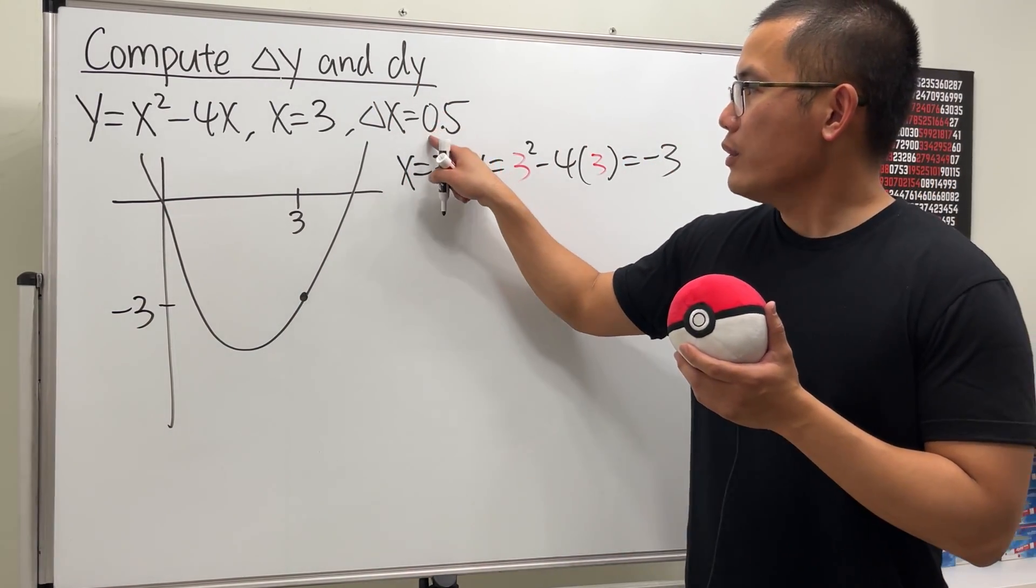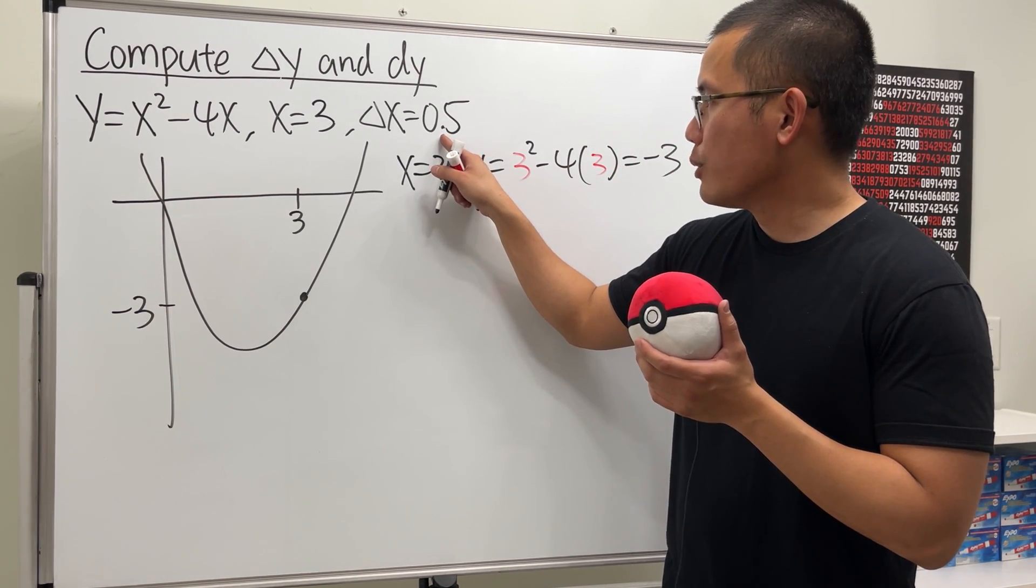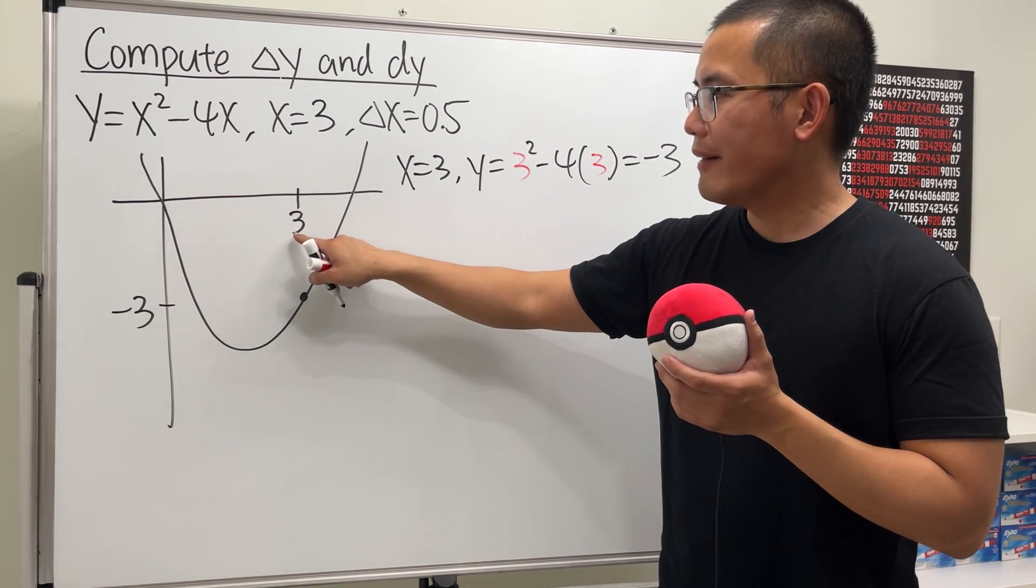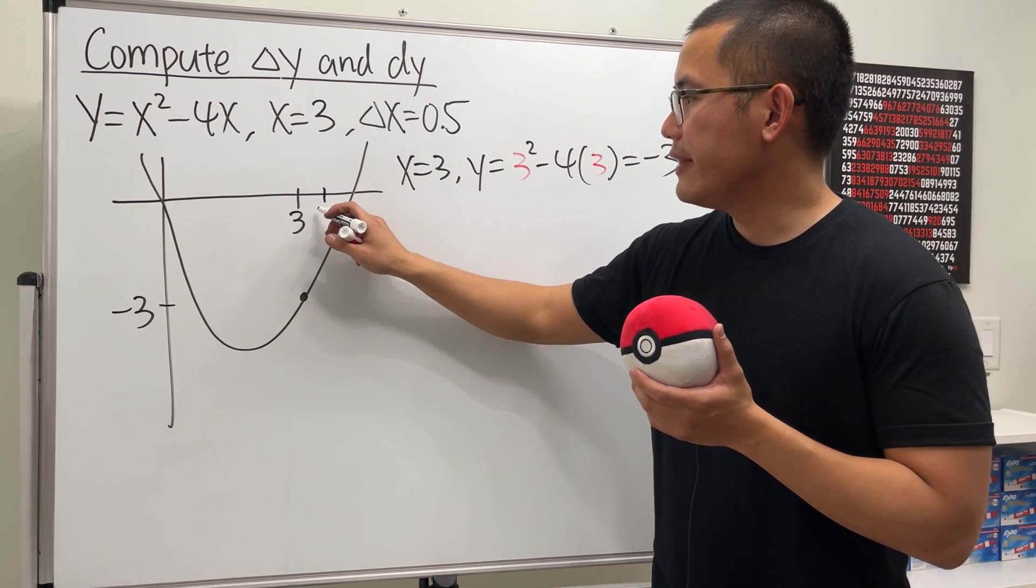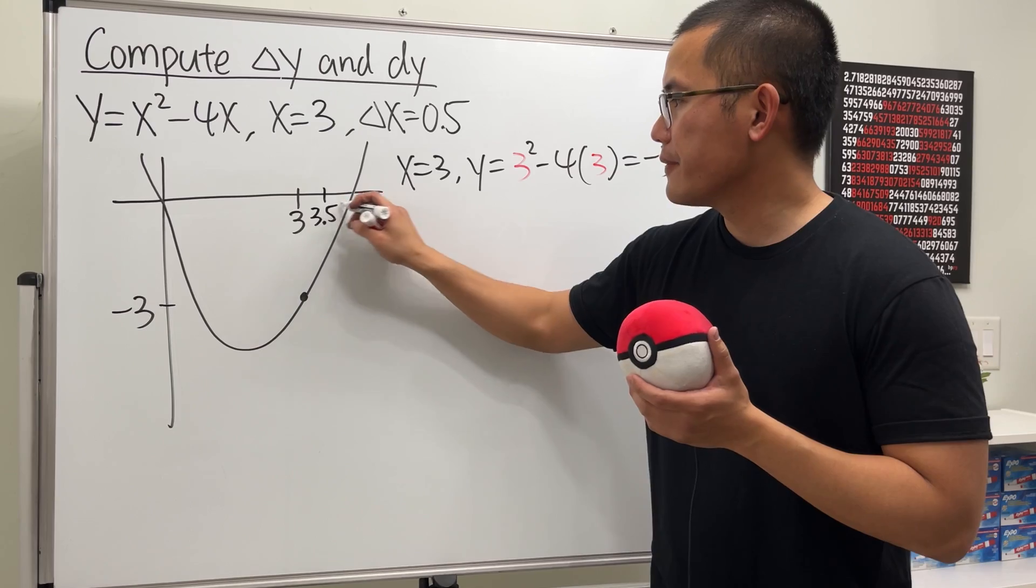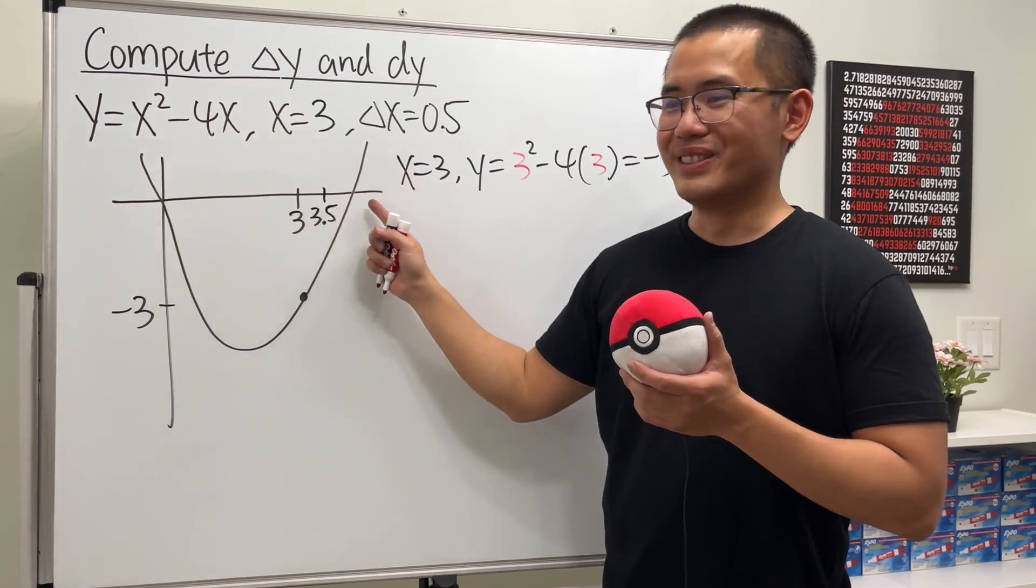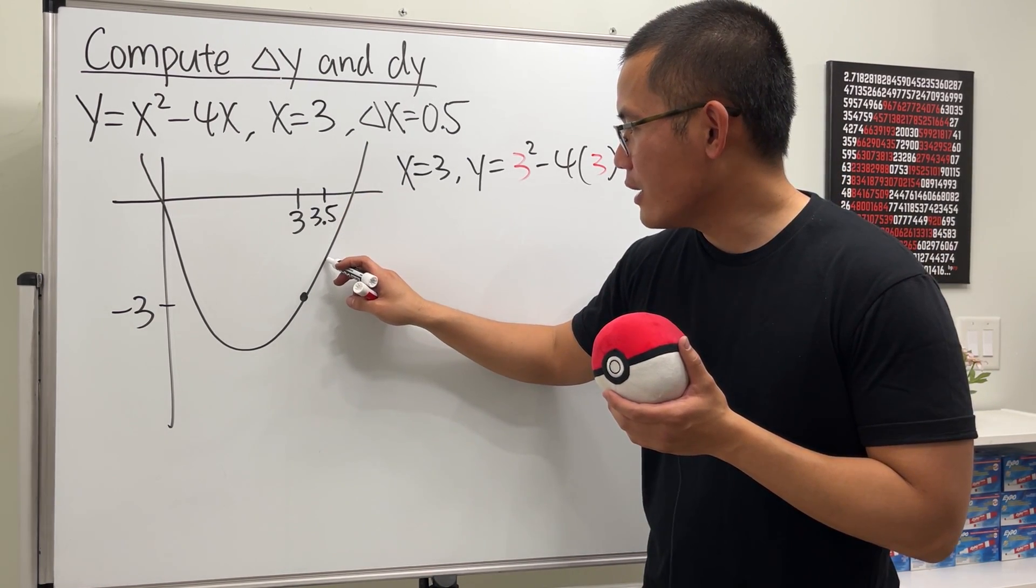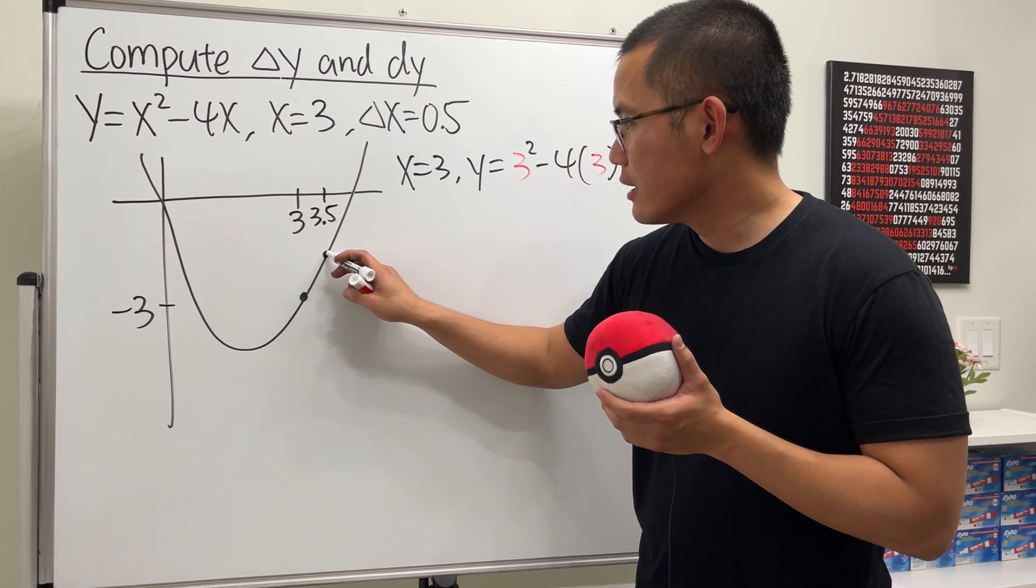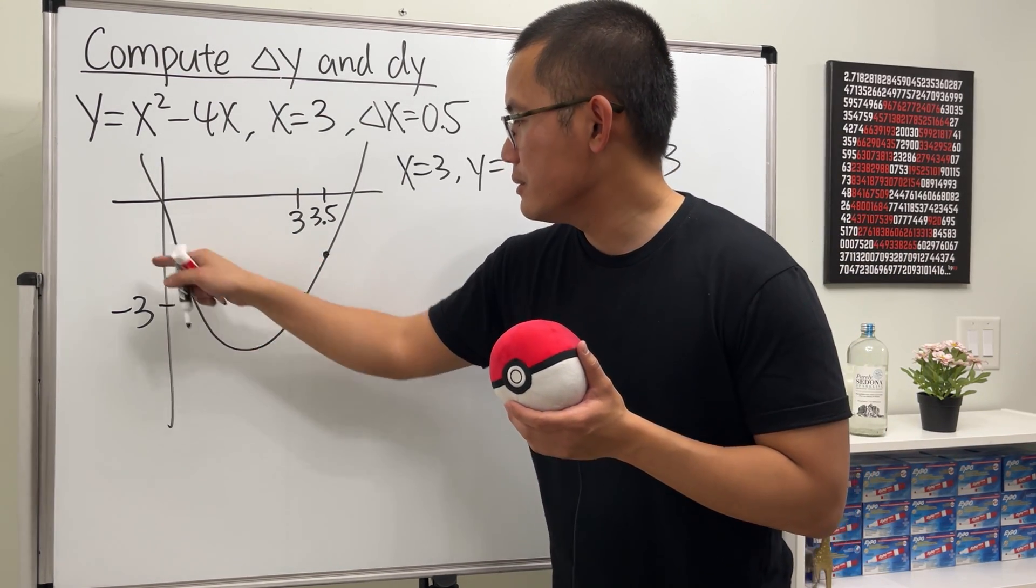That will be negative 3, like 9 minus 12, so this right here is negative 3. Next, delta x means the change in x, and positive 0.5. So that means we will have to go from 3 to the right 0.5 unit, and that will give us 3.5.